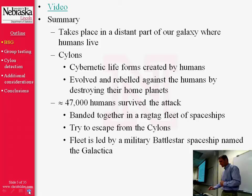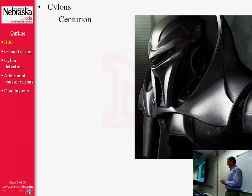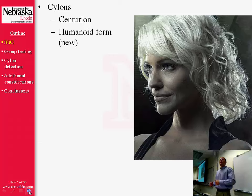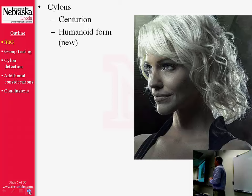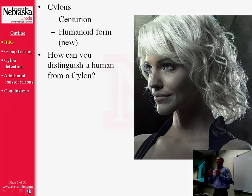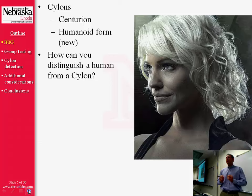In the video, you saw two different kinds of Cylons. The first kind is a Centurion — a metallic-like robot, originally created by the humans. But the Cylons evolved to a new humanoid form, which was originally unknown to the humans. This new humanoid Cylon is what led to the almost complete destruction of humanity. Early on in the TV series, the humans find out that this humanoid form exists, and so a very important question becomes: how can you distinguish a human from a Cylon?